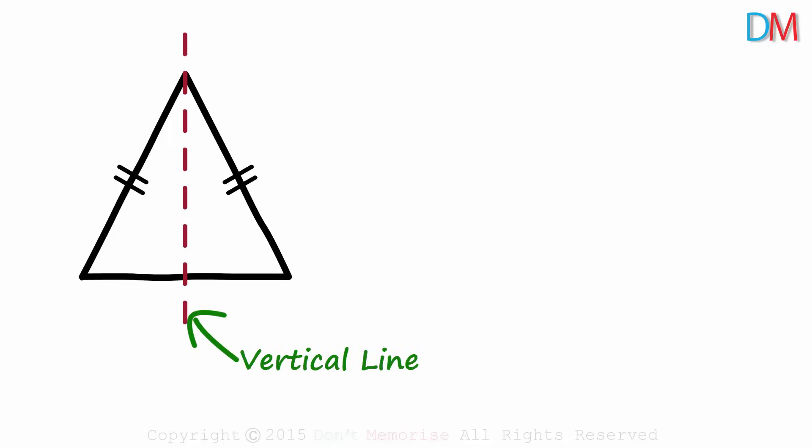Yes, it's a vertical line which divides the triangle into two parts, which match exactly when folded along the line. If the part on the right is taken over to the left, we see that they overlap exactly.